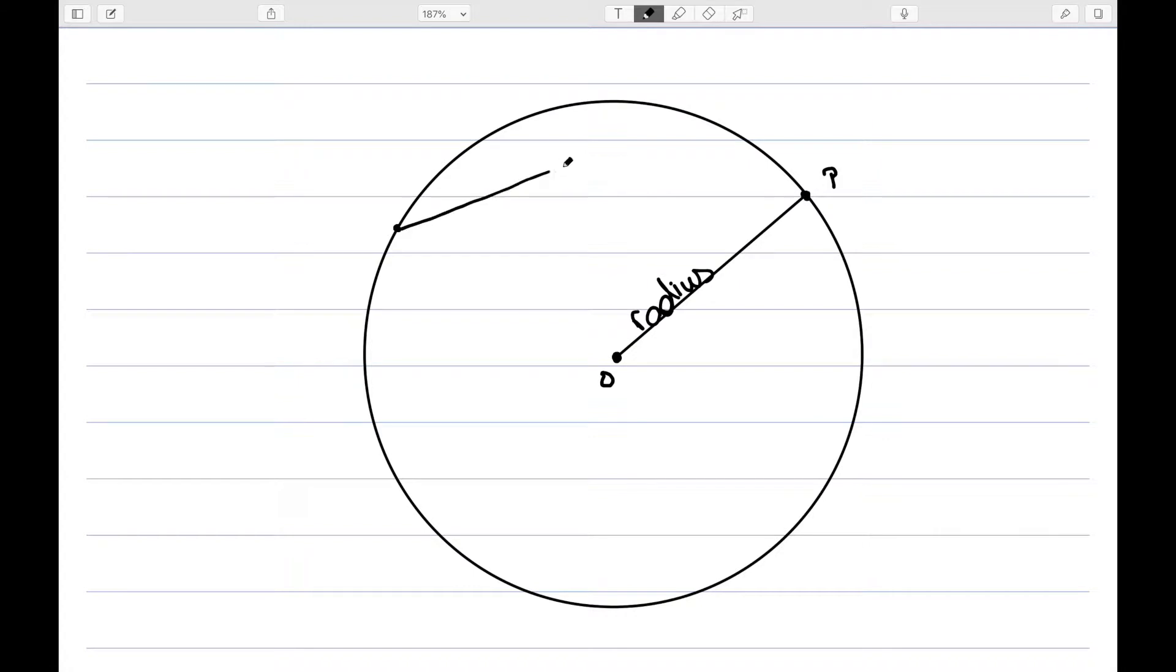If I look at a segment that passes through two points on the circle, like this, this is known as a chord.